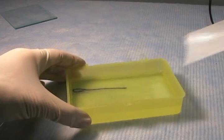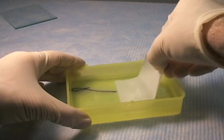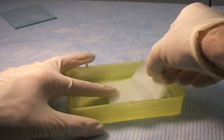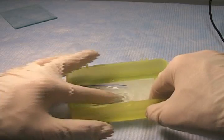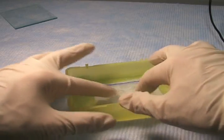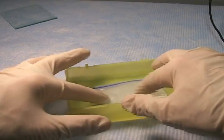Now for a Western blot we're eventually going to have to make a sandwich of this gel and a piece of nitrocellulose. The easiest way to do that is to manipulate the gel on top of the nitrocellulose in the bath.